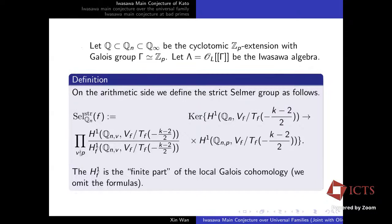To do Iwasawa theory, we have to look at the cyclotomic tower of field extensions, which we denote Q_∞ over Q, so that the Galois group of Q_∞ over Q is isomorphic to Z_p. This field extension is obtained by adjoining all p-power roots of unity into Q, then taking the sub-extension so that the Galois group is isomorphic to Z_p. We denote this scalar group as Γ, and define the Iwasawa algebra to be the completed group algebra of Γ with O_L coefficients.